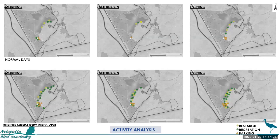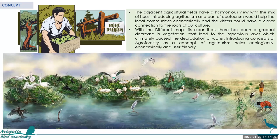The site is almost dead during the off-season. Only during migratory bird season do many people come for recreation and research. After all the analysis, I've come up with the concept of blending human needs without hampering the existing site condition. I've introduced the concept of agritourism so that communities adjacent to the bird sanctuary can help in reviving the wetland while also gaining economic value. I've introduced agroforestry in paddy fields so that resident birds can also benefit alongside human needs.